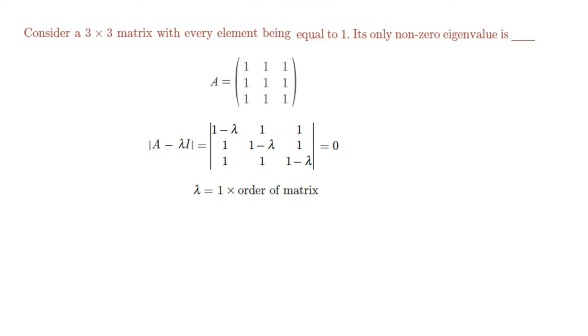We know that the non-zero eigenvalue for the matrix A is estimated by the given number 1 times the order of the square matrix. That equals 1 times 3, so the resultant eigenvalue is 3.